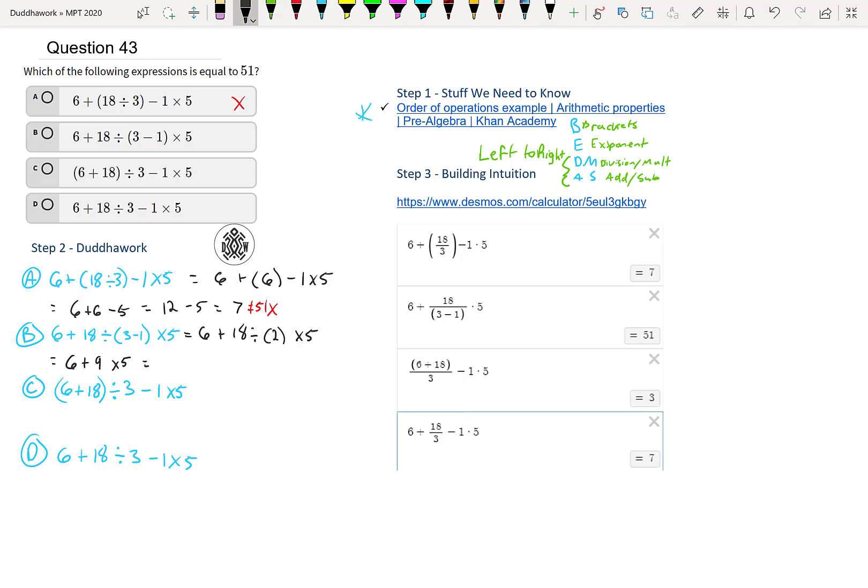And now we have an addition and a multiplication. So we do the multiplication first. 9 times 5 is 45. So we have 6 plus 45. That's equal to 51. So that's equal to 51, we get a checkmark, and we can conclude that it's this one.